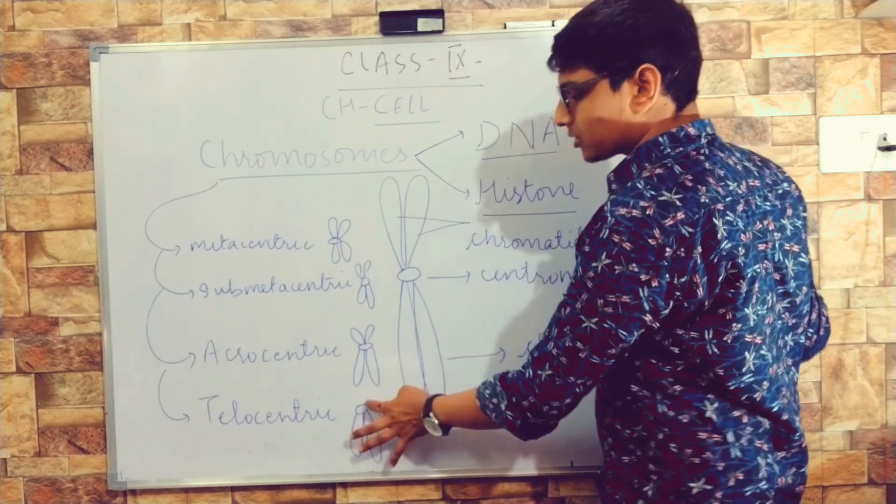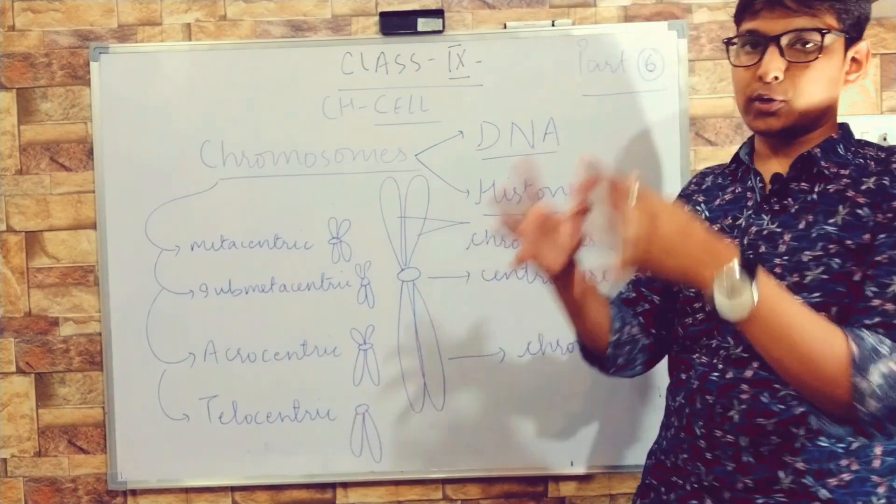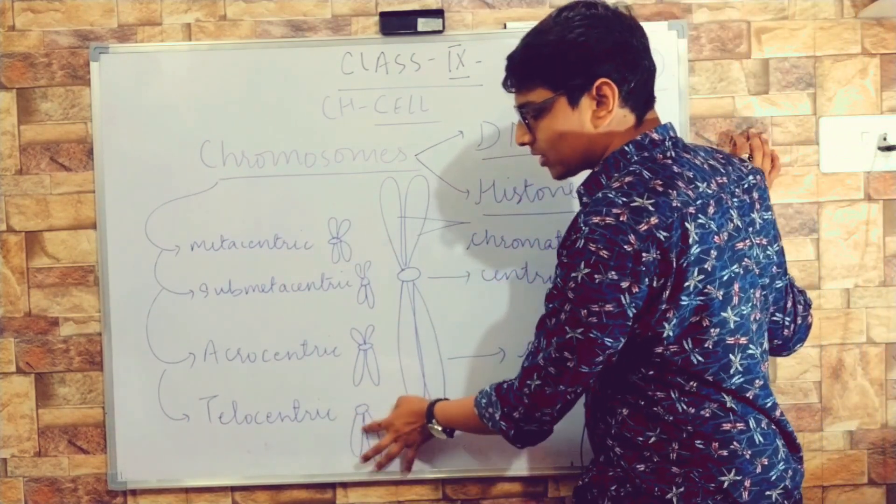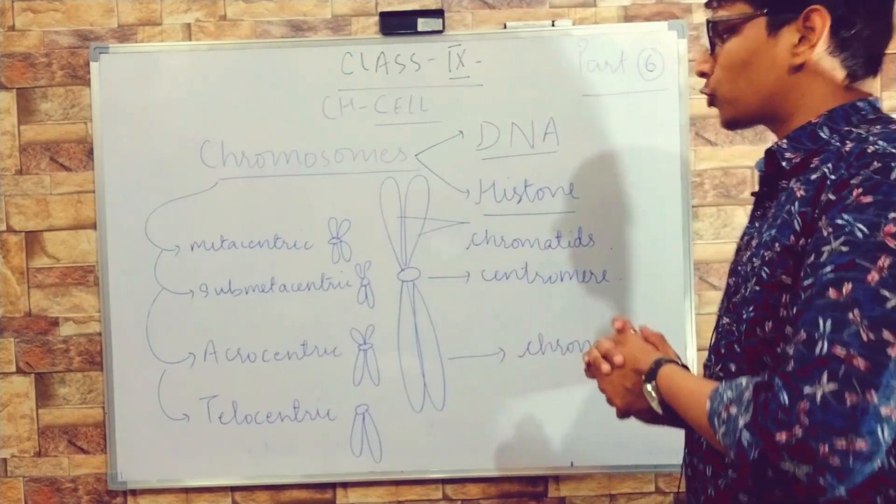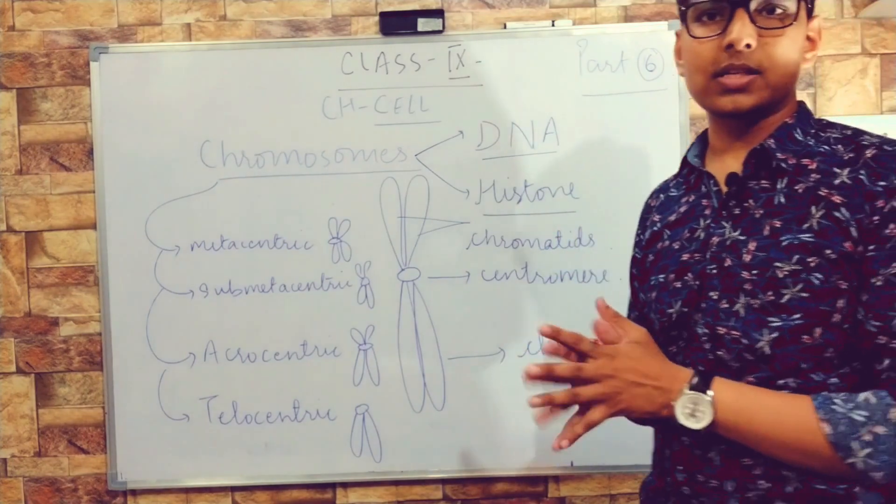From the centromere, the chromatids just appear to be hanging, so only one side of centromere chromatids are present because it is at the tip. These are four basic types of chromosomes.